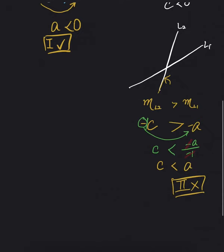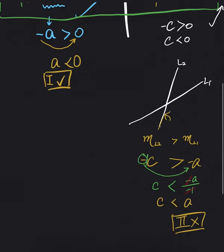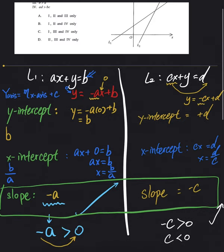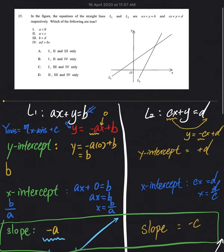So when the second choice is wrong, you can already cancel choice A, B, and D. So that leaves our answer to be C. But then we can still compare how choices 3 and 4 are correct.